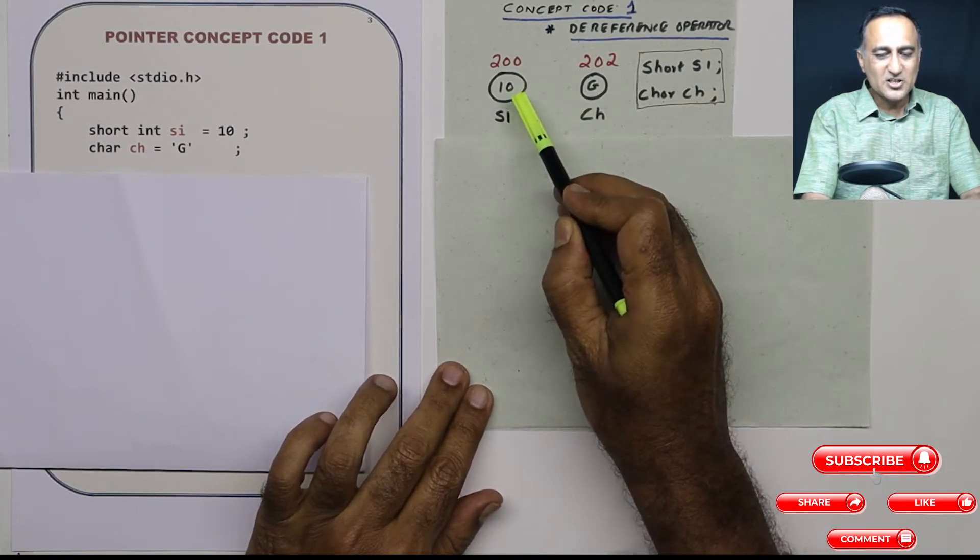Now I just need to tell you how they will look in memory conceptually. So let us say SI is a short int and CH is the character here. CH has the initial value G, SI has the initial value 10. The items in red represent the addresses of SI and CH. Let us for conceptual clarity, assume that SI exists at address 200 in the main memory and CH exists at address 202.